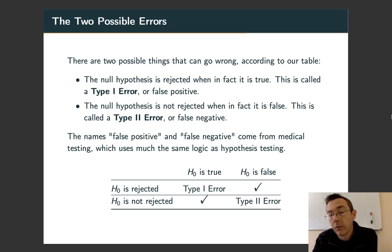The names false positive and false negative come from medical testing where the logic is very similar to significance testing. In that test, you may be testing for a disease. You may have it or not have it. The test may pick it up or not pick it up.